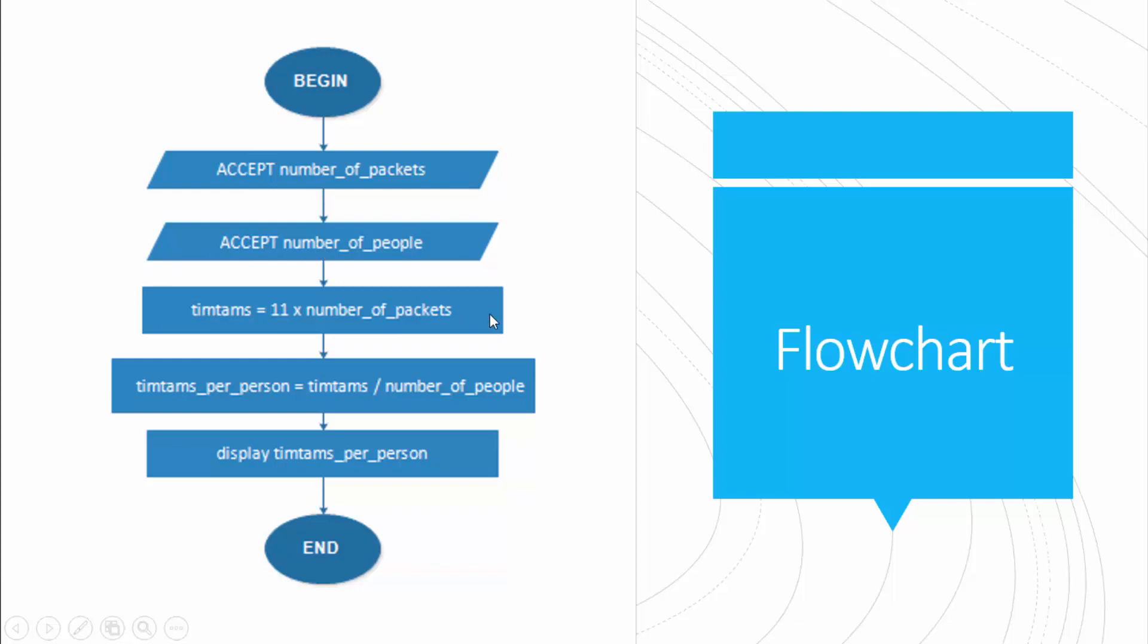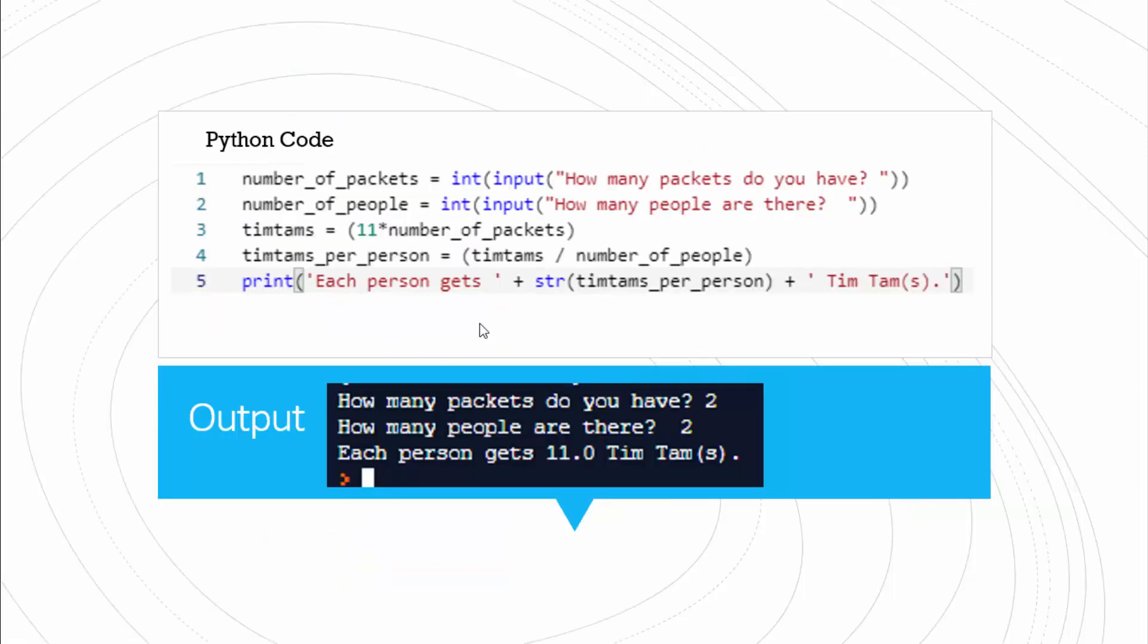Then we apply this equation: Tim Tams, the total number of Tim Tams is 11 times the number of packets. And then the Tim Tams per person is the total number of Tim Tams divided by the number of people. And then finally you display the message and the Tim Tams per person.